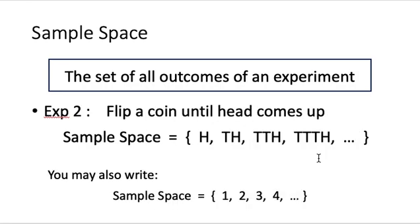And how about the second experiment? In the second experiment, we are going to flip a coin until head comes up. So we can represent the sample space as: it could be H — we get the head immediately — or tail then head, or tail tail head, or tail tail tail head, and so on and so forth. Notice that there are many different ways to write down the sample space. This is a case where we write down what you see in each flip.